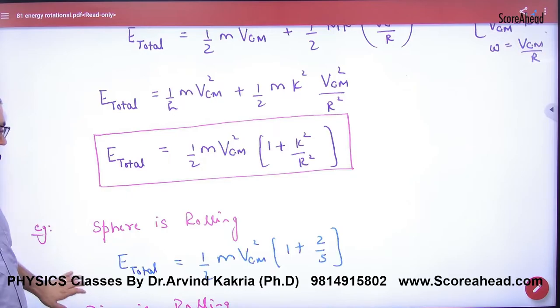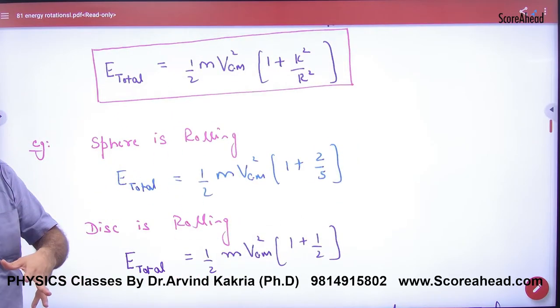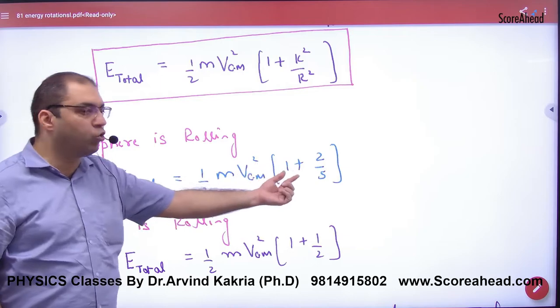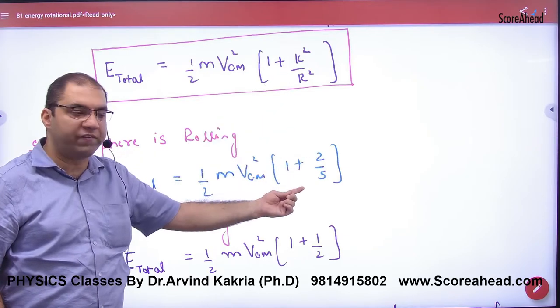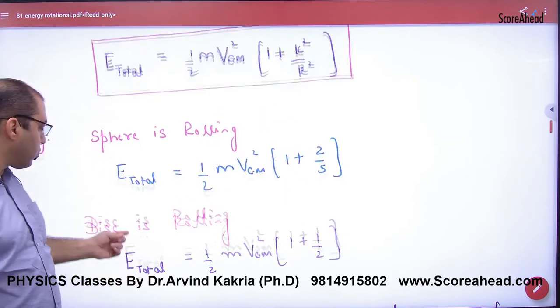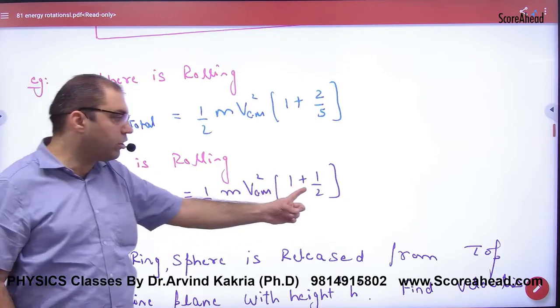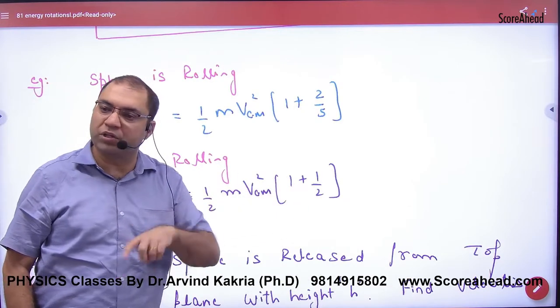Because today the numerical comes in solid sphere. So what is k²/r²? 2/5. So we will put here 2/5. Answer. If the question comes on disk, then what is k²/r²? Half. Then the rolling energy of disk.